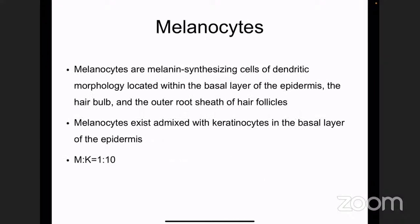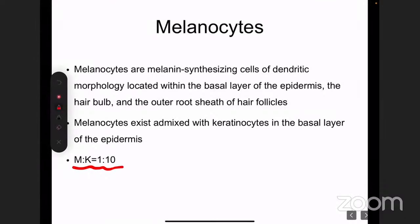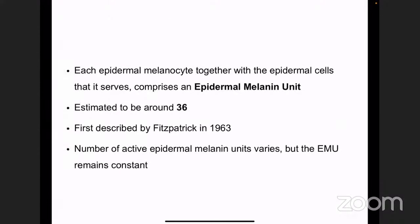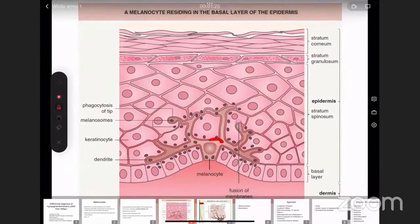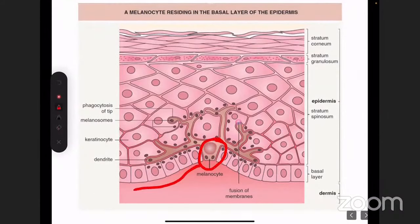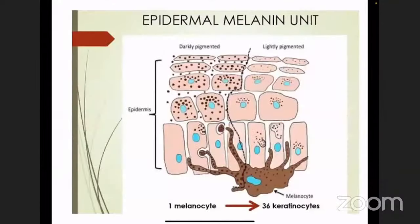Brushing the basics: melanocytes are the main cells involved in any hypopigmented disorder. They are mainly present on the basal layer of the epidermis, the hair bulb, and the outer root sheath of the hair follicles. Two important values to know: the melanocyte-to-keratinocyte ratio is 1:10, meaning for every melanocyte there are 10 keratinocytes present.